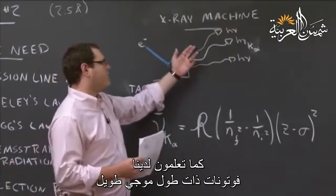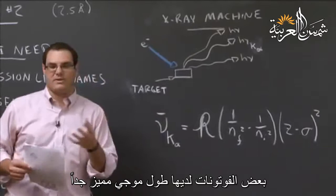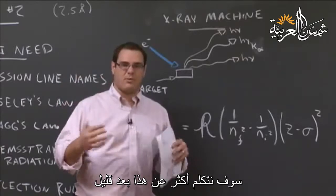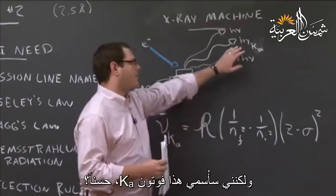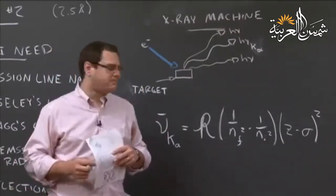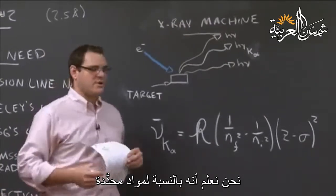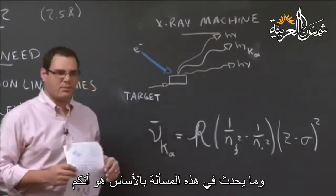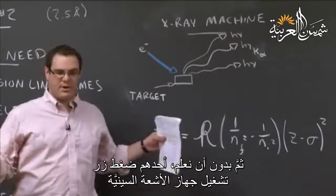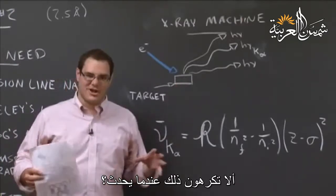Some of those photons, as we'll talk about later in the Bremsstrahlung spectrum, are very characteristic of the material. We've got long wavelength photons and short wavelength photons. Some of the photons have a very characteristic wavelength or frequency that corresponds to a particular electron transition. I'm going to call this the K-alpha photon. For particular materials we have particular K-alpha wavelengths.